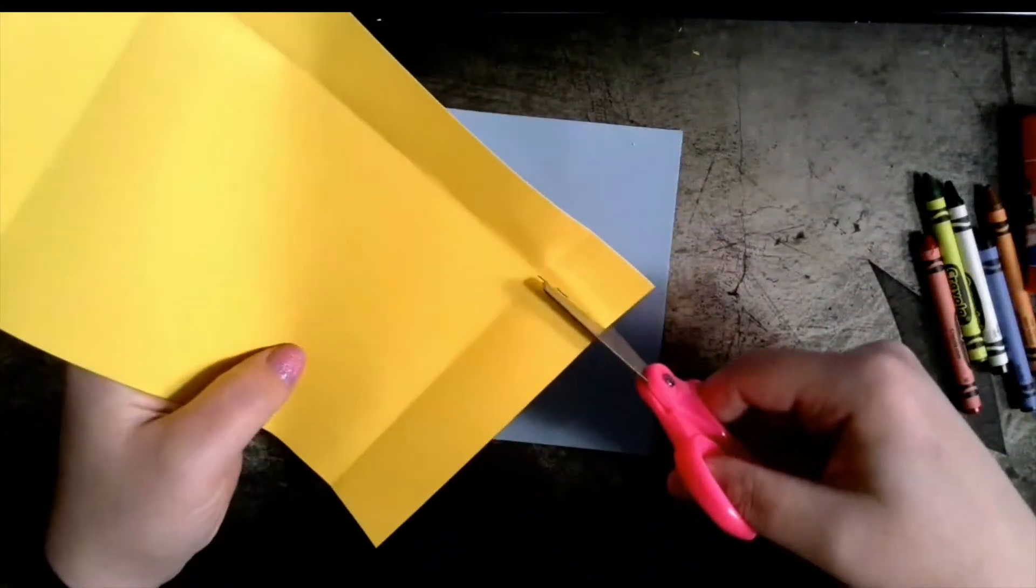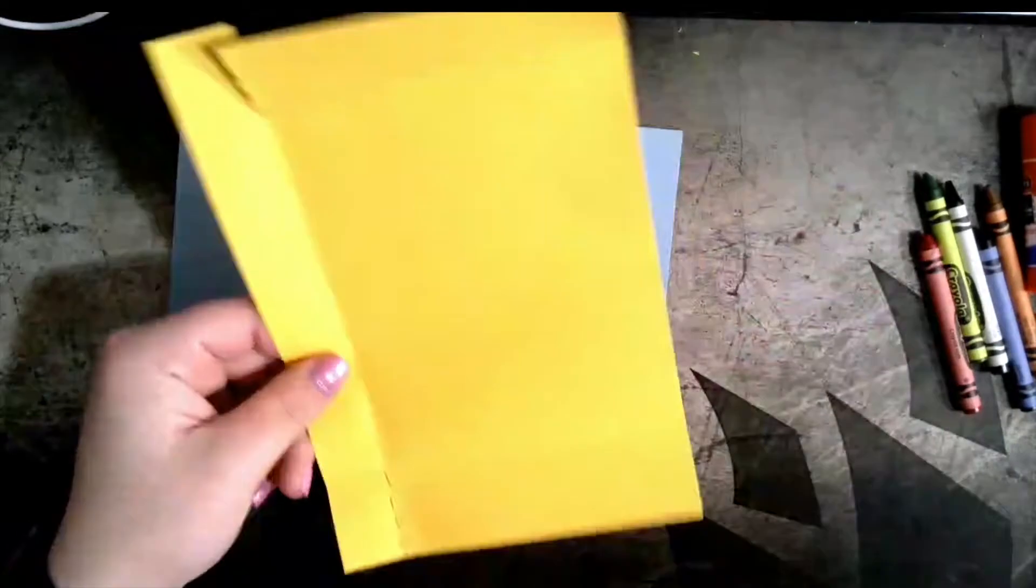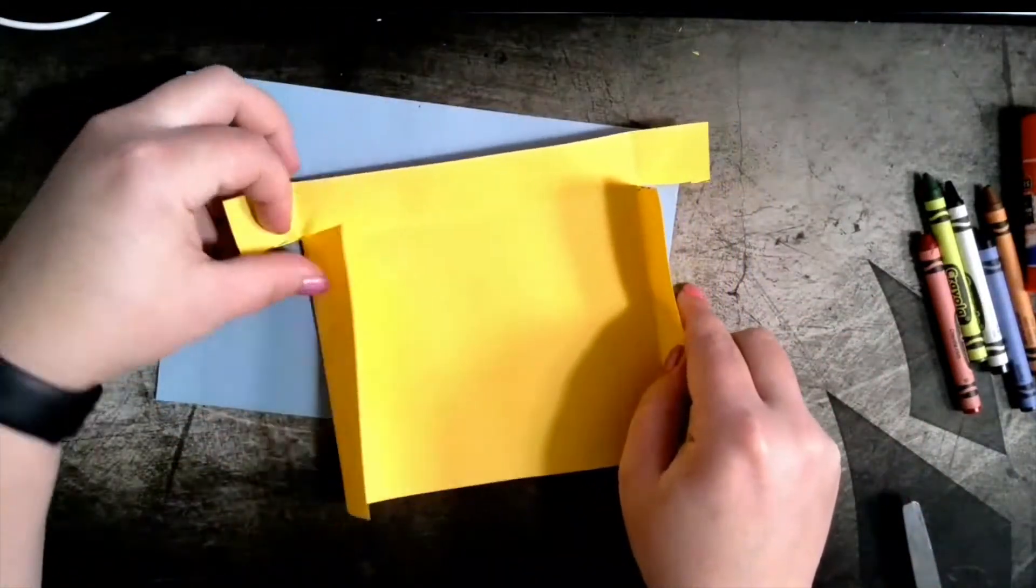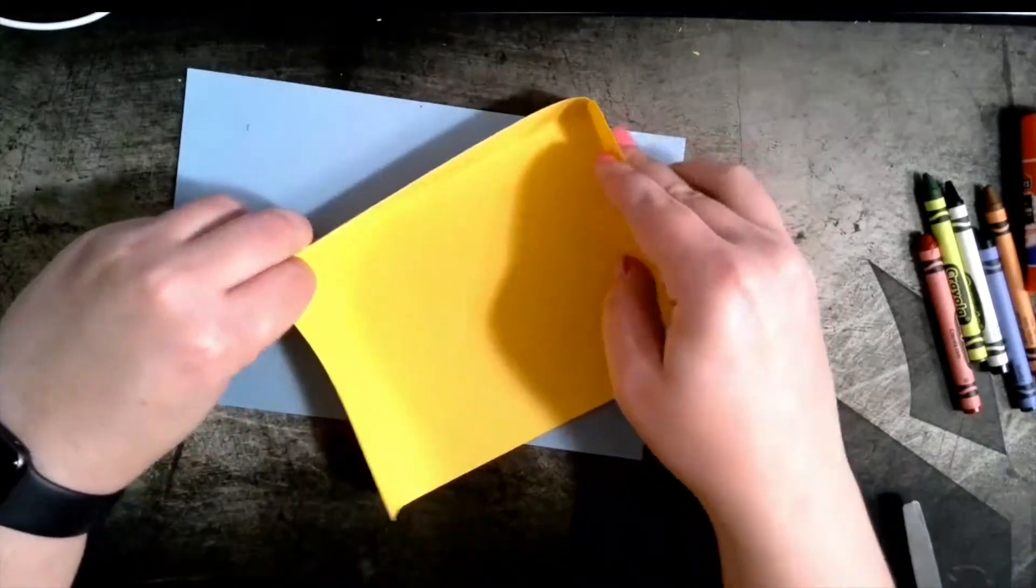I'm going to make two small cuts. The cuts do not need to go very far, it's just to make a tab so that we can glue our tray walls so they stand up.